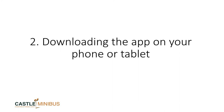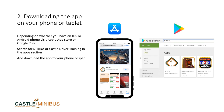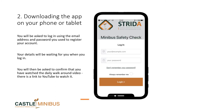You will now move on to downloading the app on your phone or tablet. You will have set up the dashboard on your PC, and this is the part where you download the app on a phone or tablet to complete either your daily or weekly checks. Depending on whether you have an iOS or Android phone, visit the Apple Store or Google Play and search for Strider or Castle Driver Training, then download the app. The app is completely free to use. You will be asked to log in using the email address and password you used to register your account.